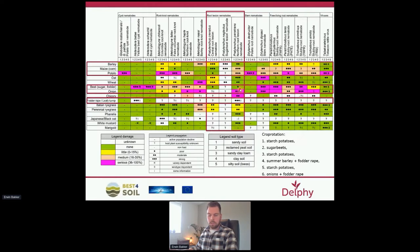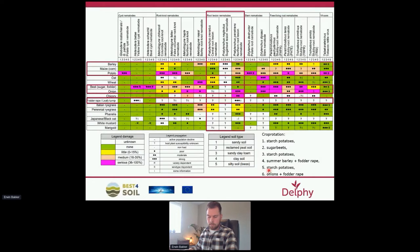Many crops in this rotation strongly multiply Pratylenchus penetrans, and this also applies to the green manure crops. In this rotation, sugar beet is grown after potatoes, and potatoes strongly reproduce penetrans. However, sugar beet does not suffer damage and does not strongly reproduce this nematode. Damage may still occur in potatoes after sugar beet. Barley is not affected by penetrans either, but the fodder rape after barley causes strong multiplication of penetrans, which can cause a lot of damage in the following potatoes and onions.